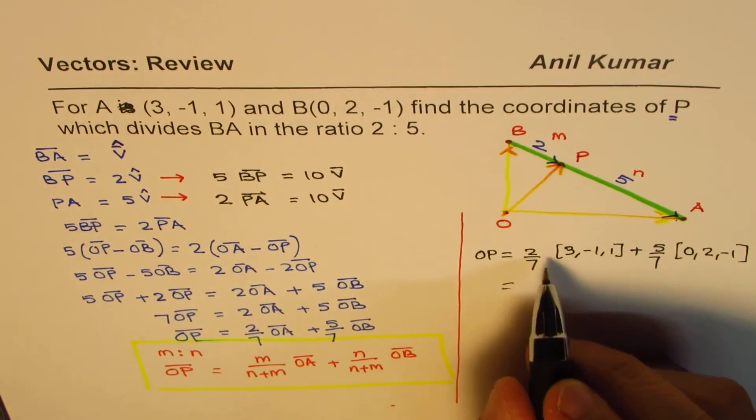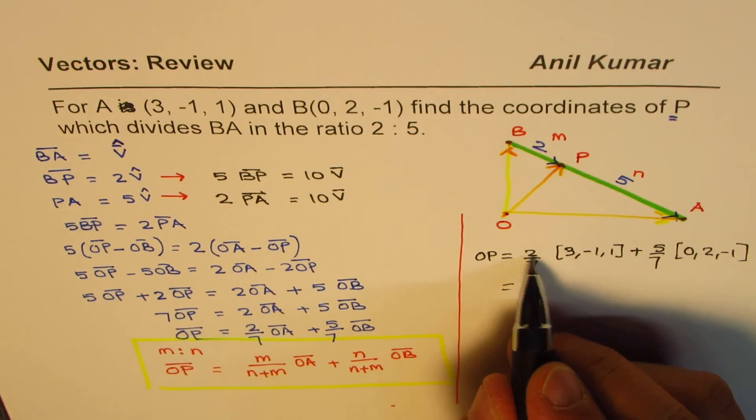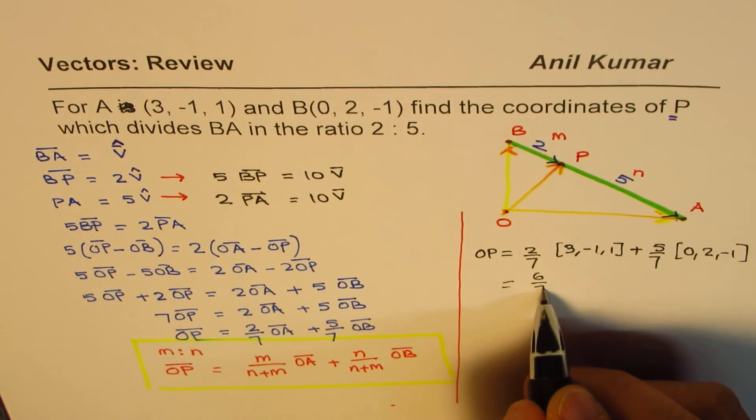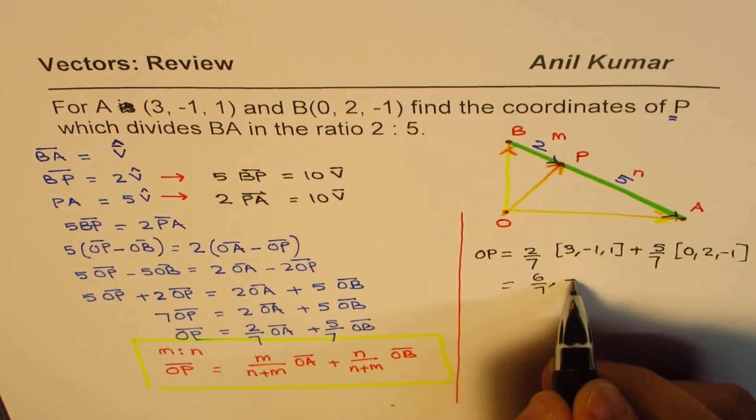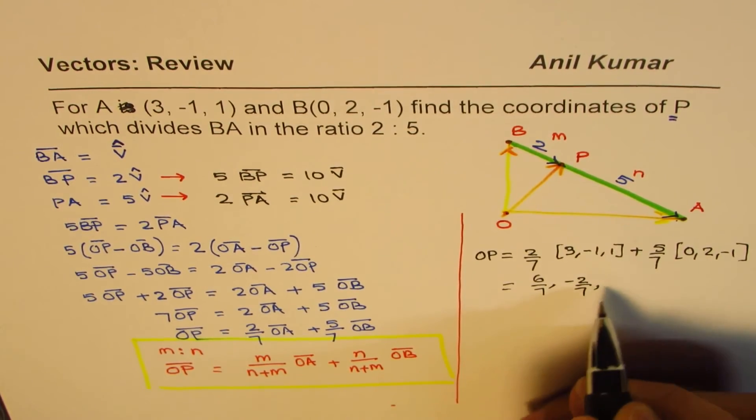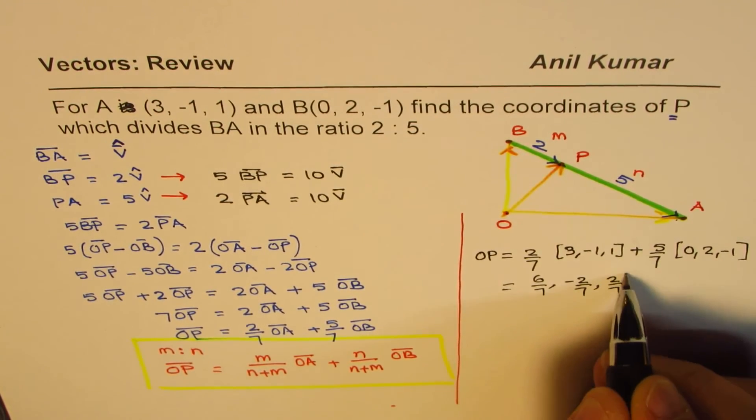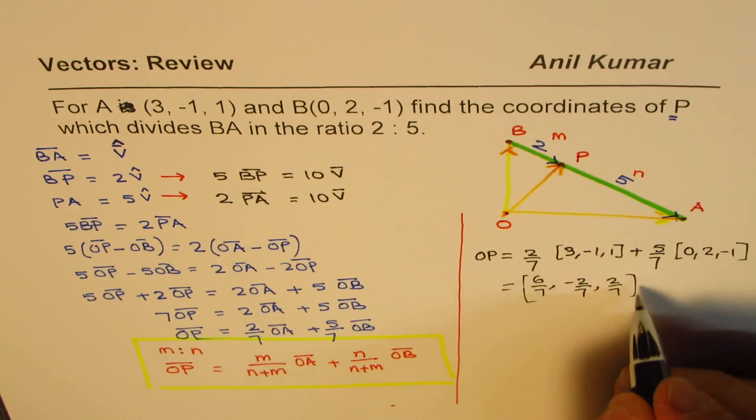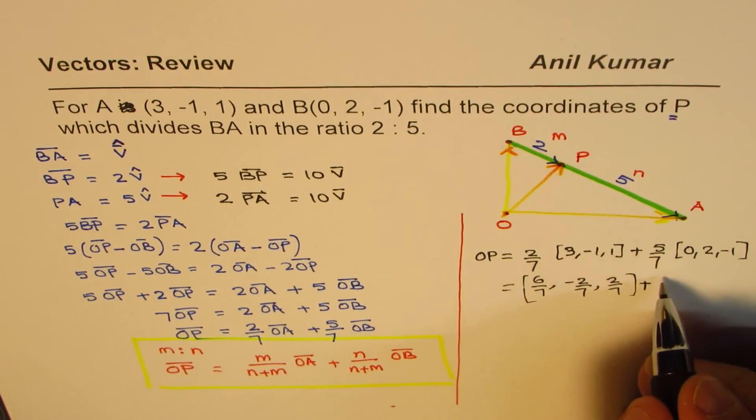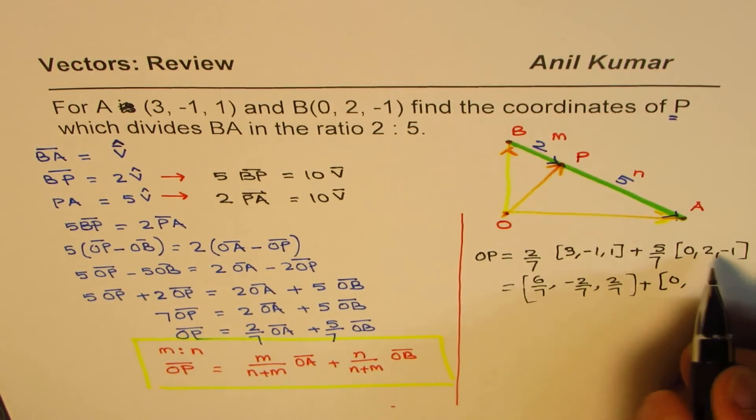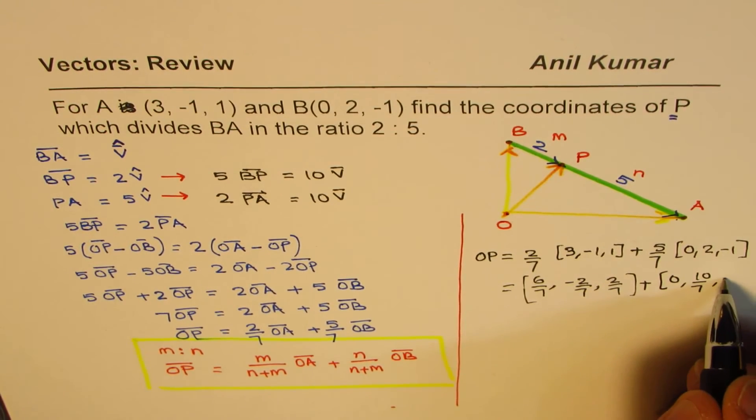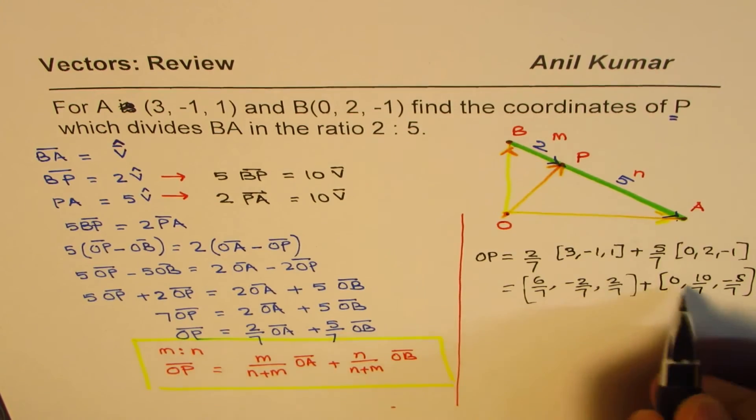Now, you can multiply all these numbers. So we get 2 times 3 is 6 over 7, minus 2 over 7, then again we have 2 over 7, so that is plus, that is 0, and this is 10 over 7, minus 5 over 7.